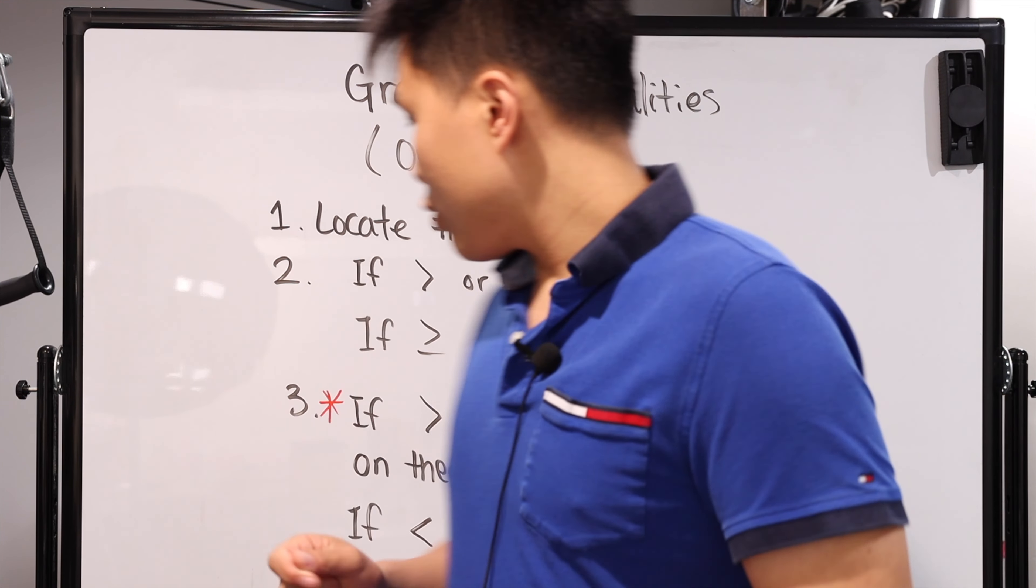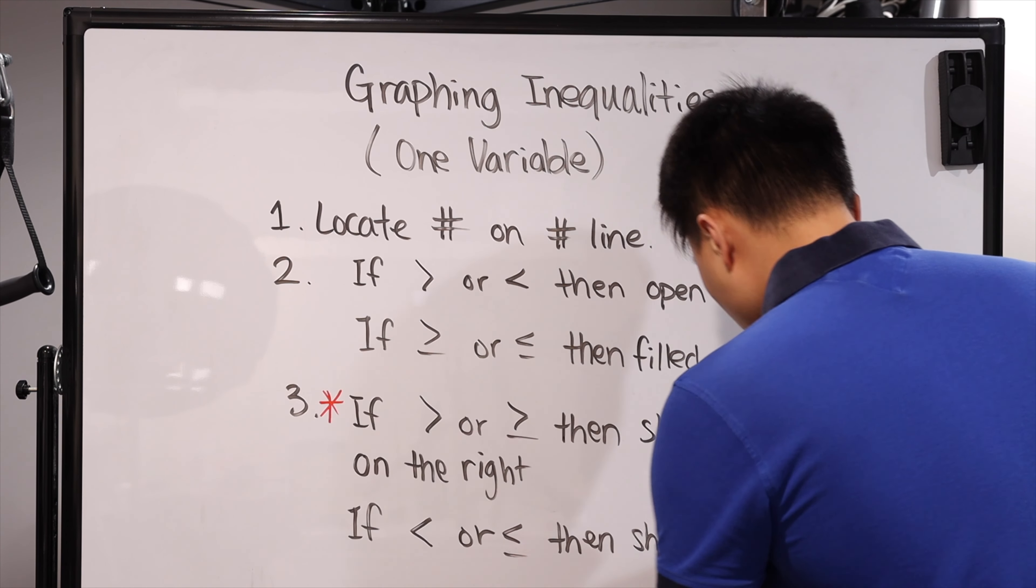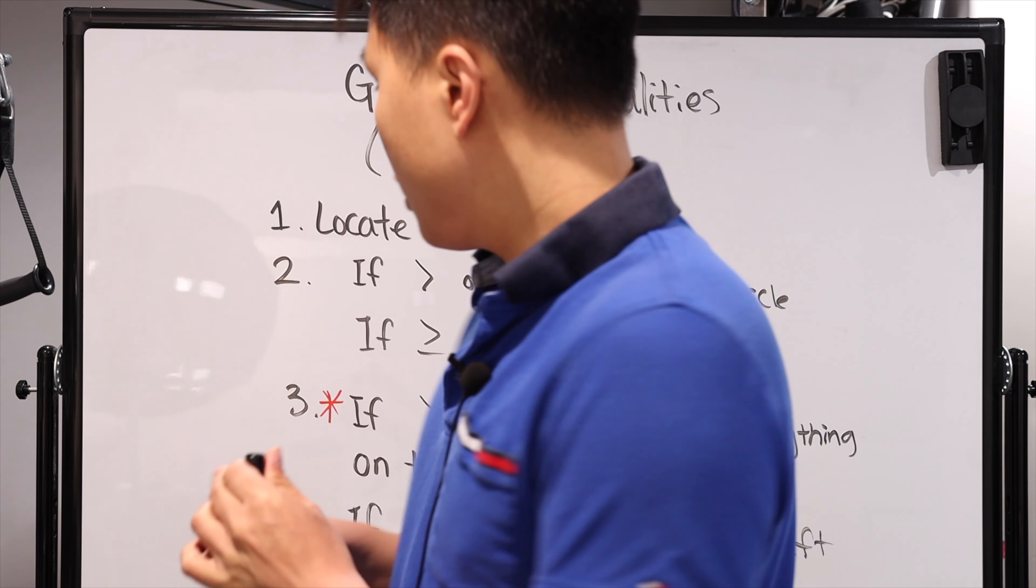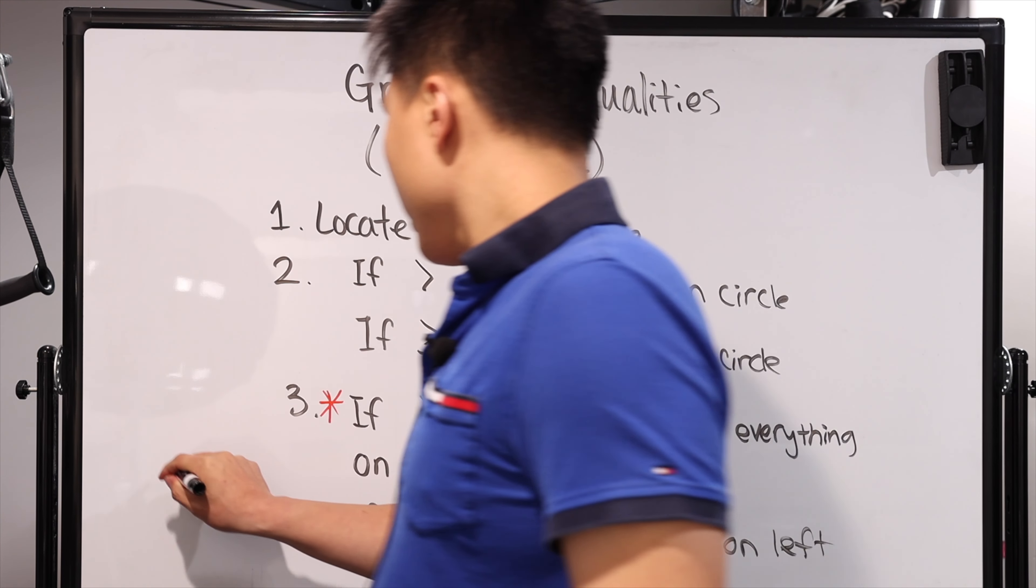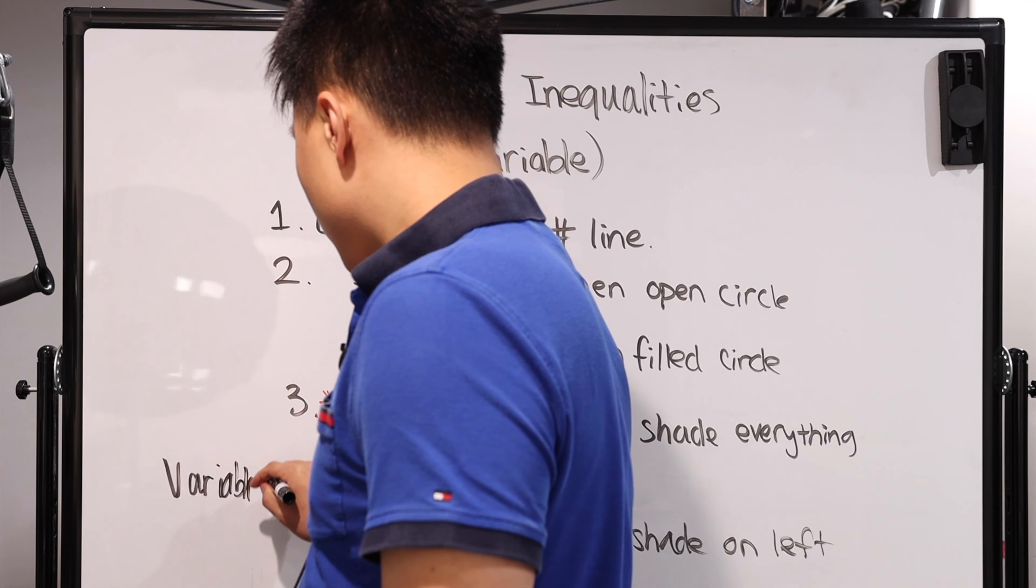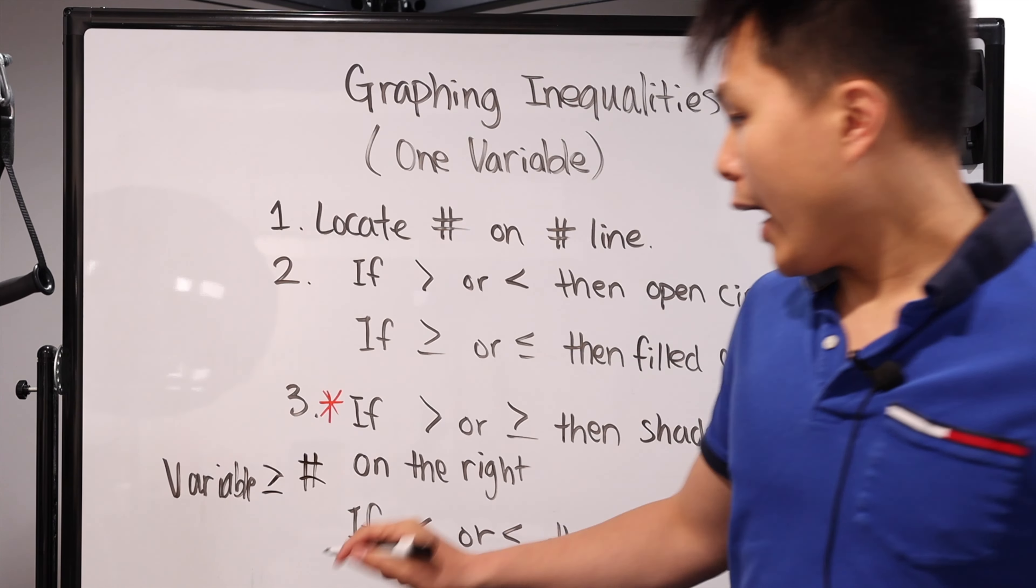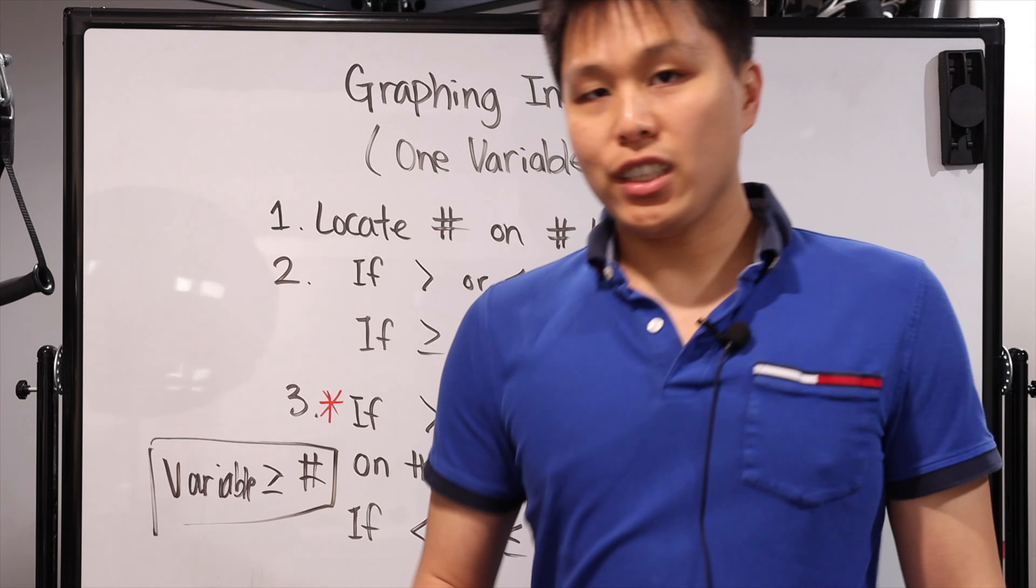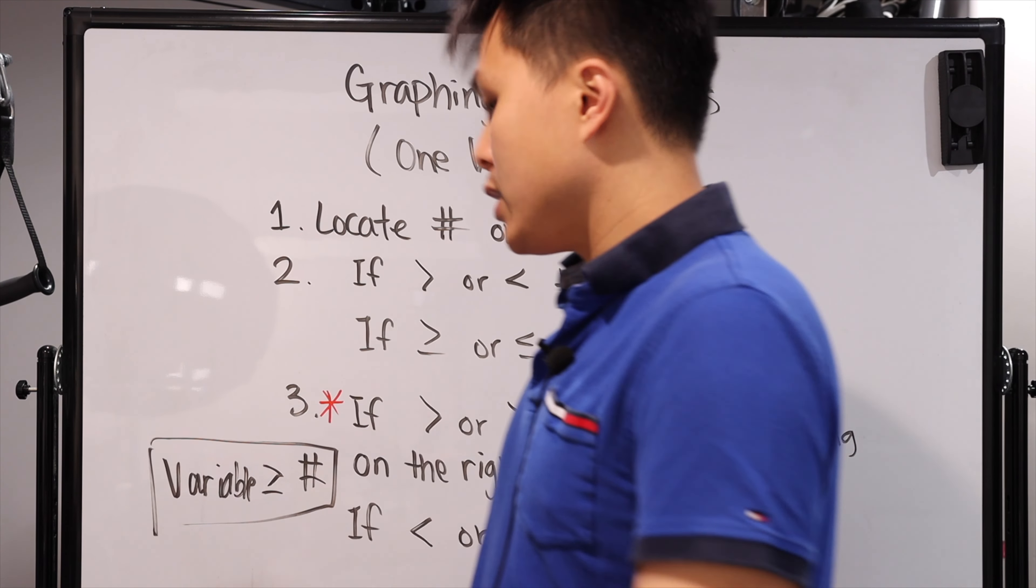In order to make sure that this step three is correct, what you actually have to do is make sure that the variable is on the left-hand side and everything else is on the right. Variable is on the left hand and then whatever the symbol is, and then all the numbers and everything else is on the right. It has to be in this format. If it is not, then step three is gonna lead you astray. You're gonna make a mistake.